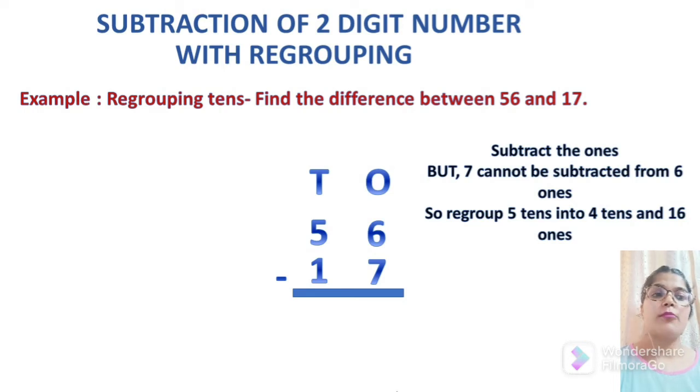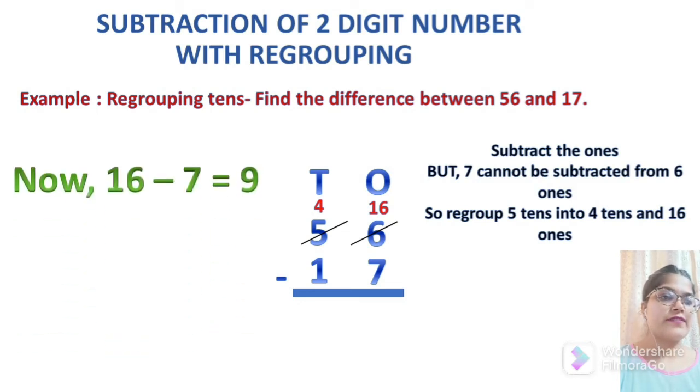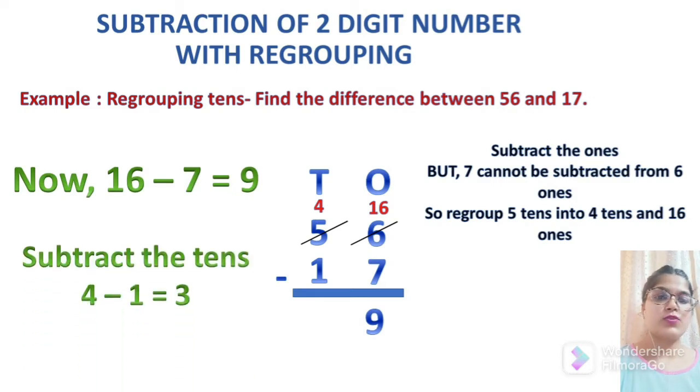Simply, we will take borrow. For that, we will put cross on 6, write 16 above that and then we will put cross on 5 and write 4 above that as it has given 1 number to 6. Now, 16 minus 7 equals 9. So we will write 9 and let's subtract the tens. 4 minus 1 equals 3.